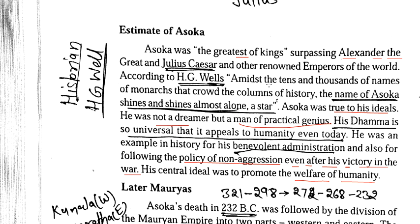This is a general introduction about Ashoka, and this paragraph also explains why Ashoka is called Ashoka the Great. So when you are writing about Ashoka, don't just write Ashoka — write Ashoka the Great. If you want to impress the examiner, because writing Ashoka the Great will show the examiner that you know about his achievements really very well.